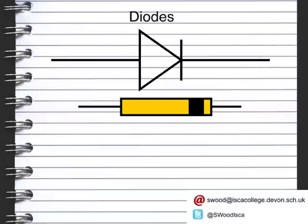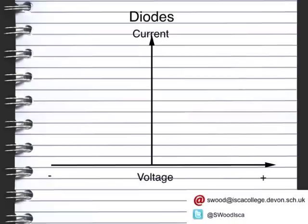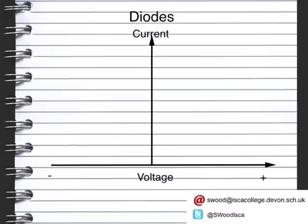Now we're going to have a look at how the actual diode works. When you have electricity running through a diode, you have two things: the voltage and the current. This graph will show you what happens to the current when you change the voltage. Here we've got a negative voltage and a positive voltage. In a normal system we'd have something that looks proportional — as we increase the voltage either negatively or positively, the current would go up.